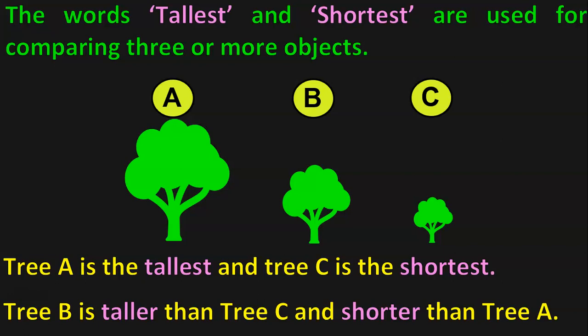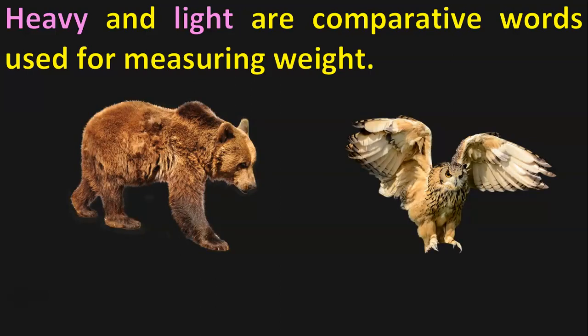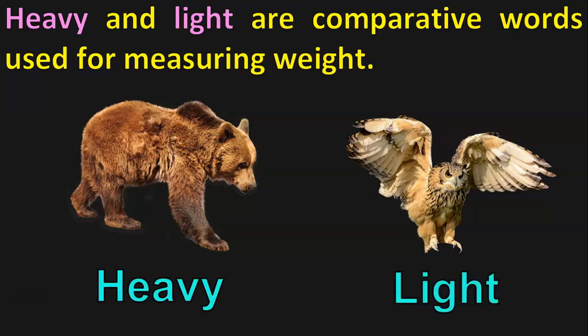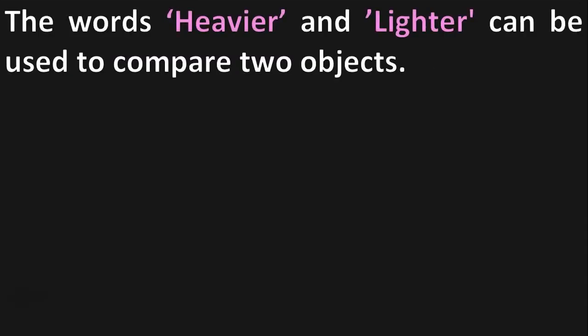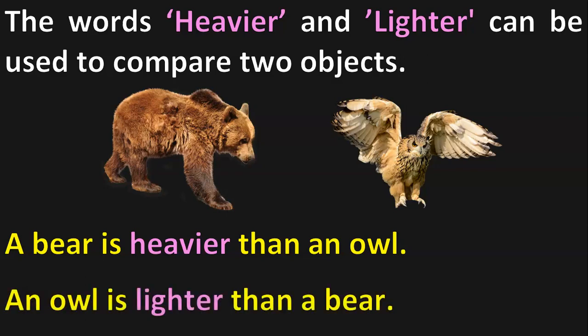The terms we learnt under Length are Long, Short, Tall and Short. The next measurement term that we are going to deal with is Weight. Heavy and Light are comparative words used for measuring weight. Let us take these two animals — a brown bear and an owl. Which is heavy? The bear is heavy and the owl is light weight. A bear is heavier than an owl. An owl is lighter than a bear.